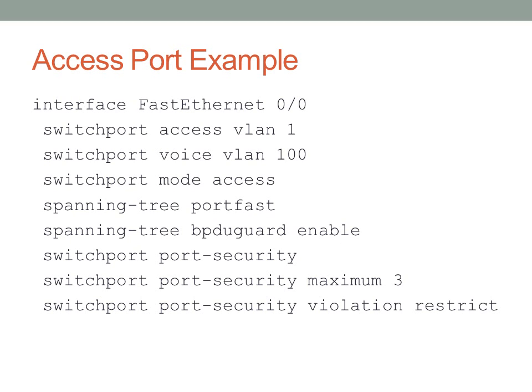Here's a quick example of an access port with access to VLAN 1. 'Switchport voice vlan' is an optional parameter to allow Cisco IP phones to access a voice VLAN, making it act like a trunk and tag that VLAN. This port is in switchport mode access, and port fast and BPDU guard are applied since access ports shouldn't connect to other switches. Port security is applied with a maximum of 3 MAC addresses and violation restrict — one for the computer on VLAN 1, and two for the IP phone on VLAN 1 and VLAN 100.